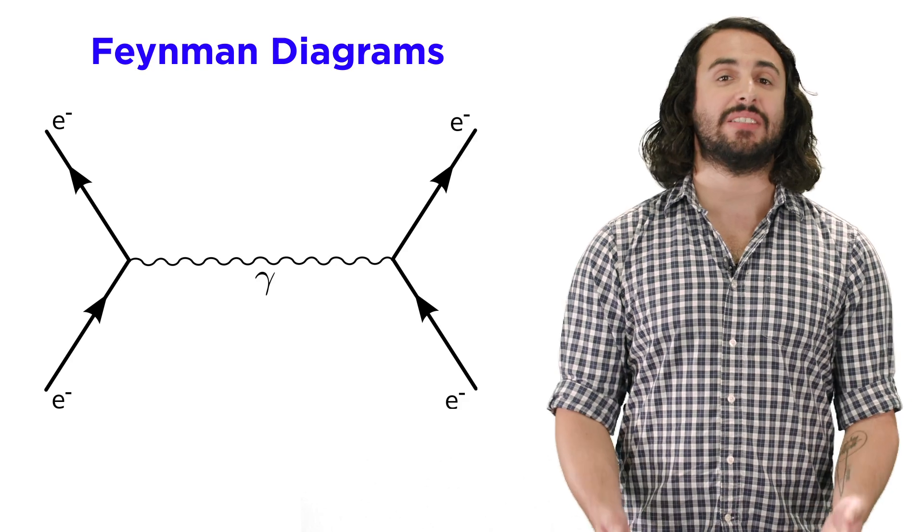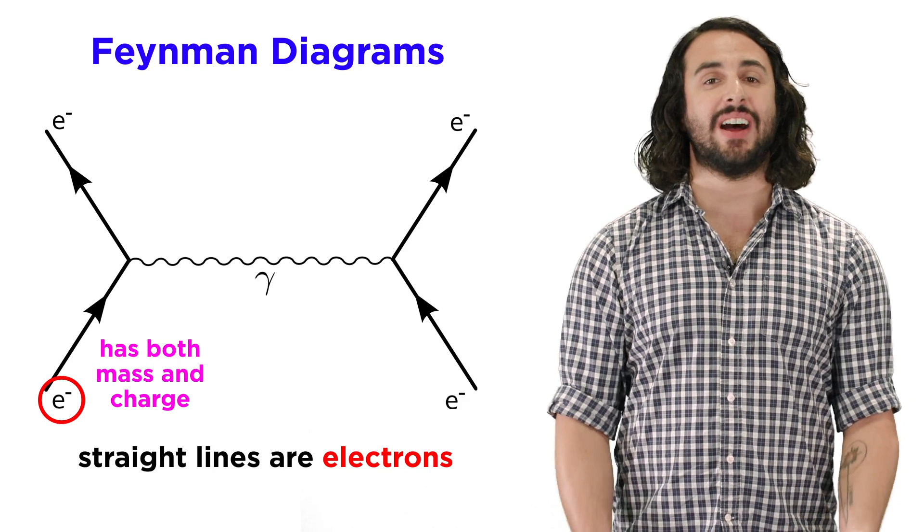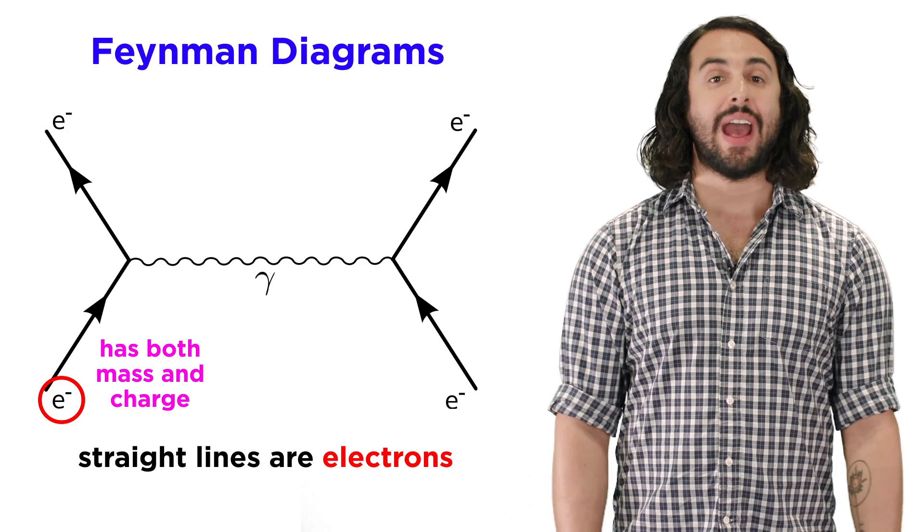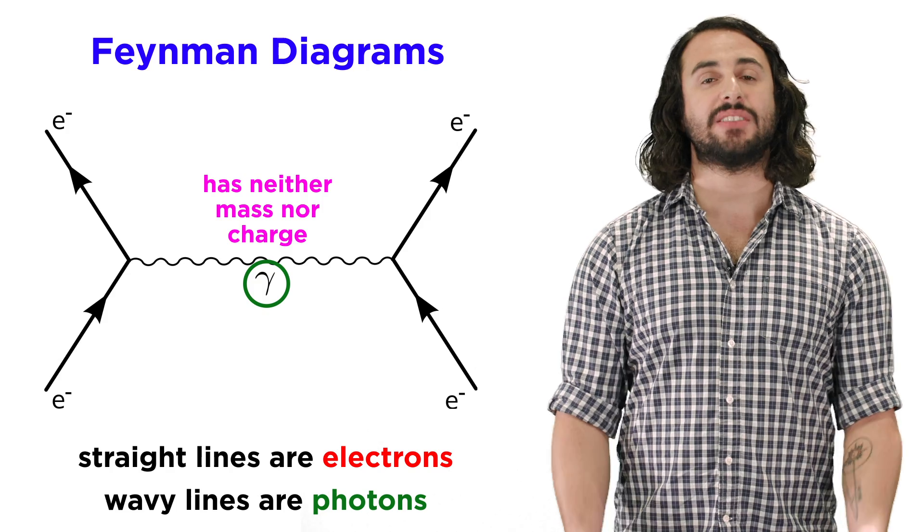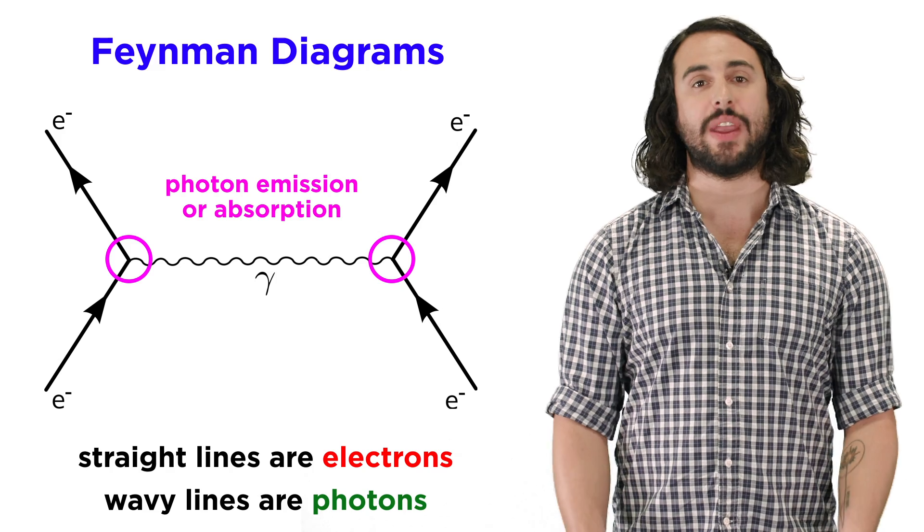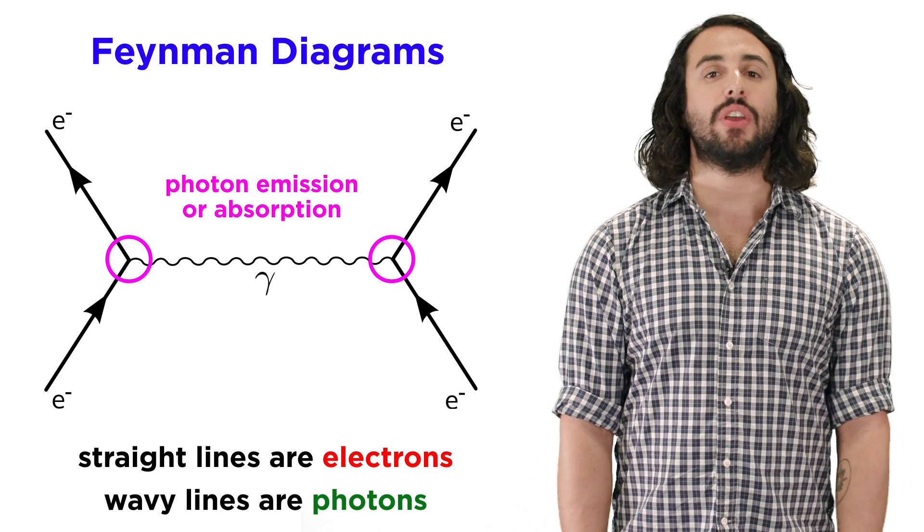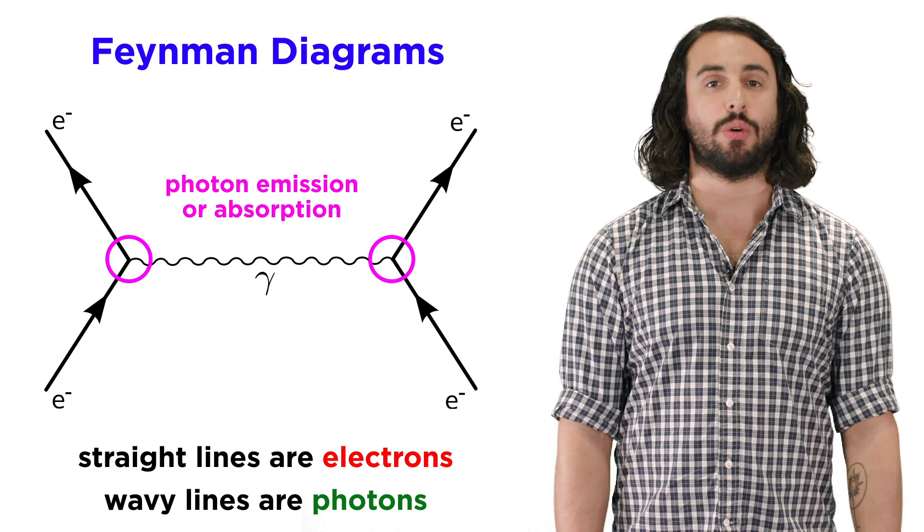In these surprisingly simplistic representations, a straight line signifies an electron, which we know has both mass and charge. A wavy line signifies a photon, which has neither mass nor charge, and when there is a junction between a straight line and a wavy line, this means that the electron has either absorbed or emitted a virtual photon.